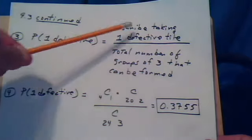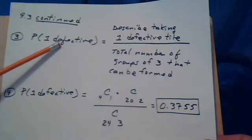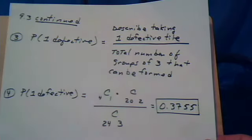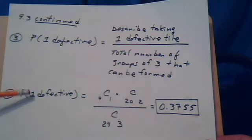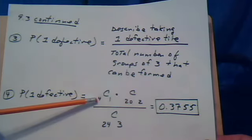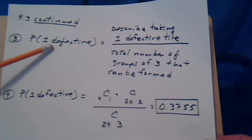The numerator always matches the probability you're looking for. So we're looking for one defective, so we need to describe taking one defective tile. So notice, we already know that there's four that are defective. We're taking one because that's the probability we're looking for.